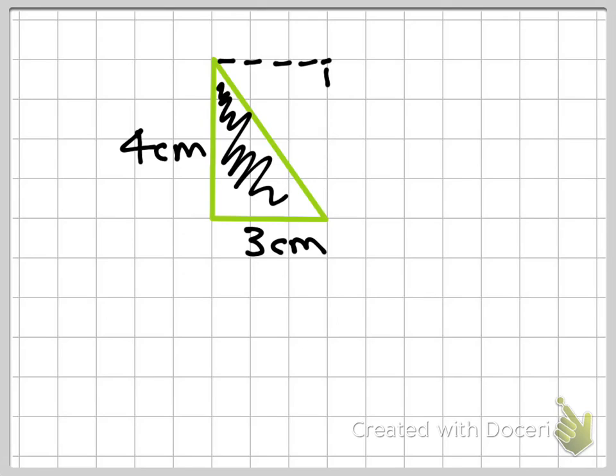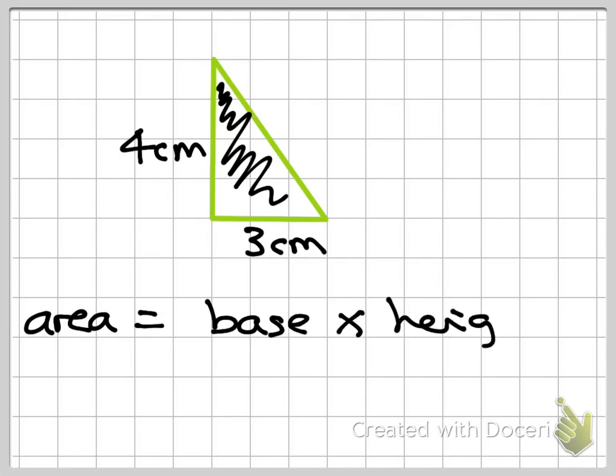Okay, so because of that, this is how I work out the area. So the area of a triangle equals the base multiplied by the height. Then you divide it by 2.